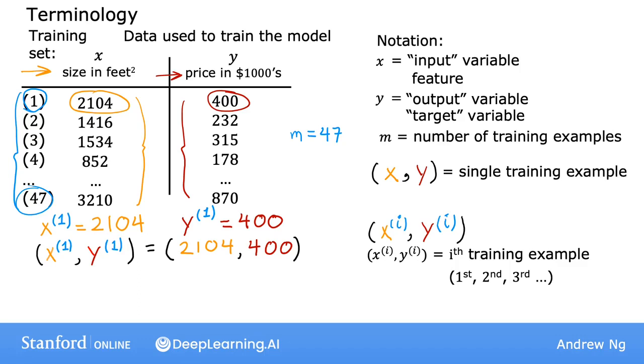Just a note, this superscript i in parentheses is not exponentiation. So when I write this, this is not x squared. This is not x to the power of 2. It just refers to the second training example. So this i is just an index in the training set and refers to row i in the table.